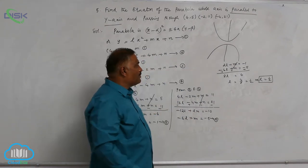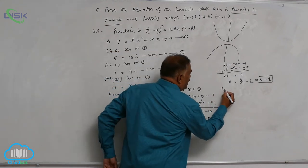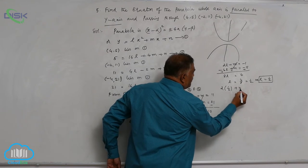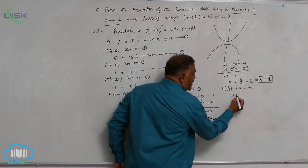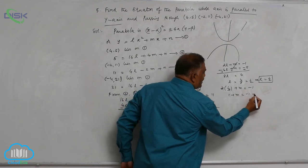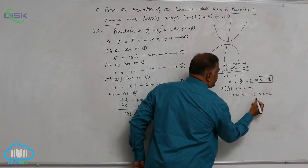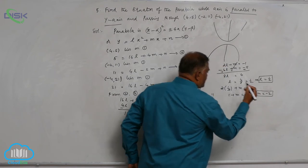Back substitution will give you m. So 2 into 1 by 2 plus m is equal to minus 1. This 2 gets cancelled. 1 plus m is equal to minus 1. So m is equal to minus 2.